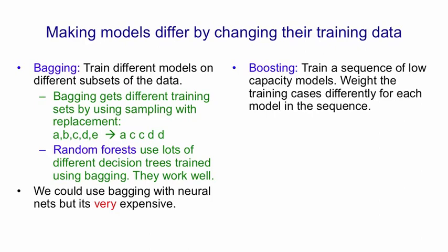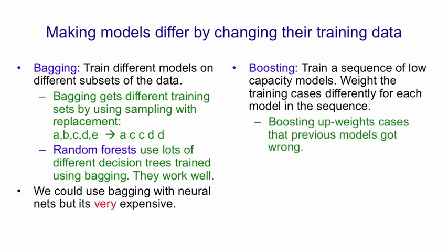Another method for making the training data different is to train each model on the whole training set but to weight the cases differently. So in boosting we typically use a sequence of fairly low capacity models and we weight the training cases for each model differently. What we do is we up-weight the cases the previous models got wrong and we down-weight the cases the previous models got right. So the next model in the sequence doesn't waste its time trying to model cases that are already correct. It uses its resources to try and deal with the cases the other models are getting wrong.